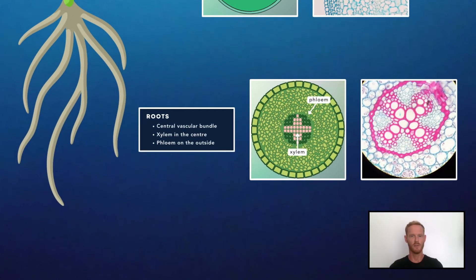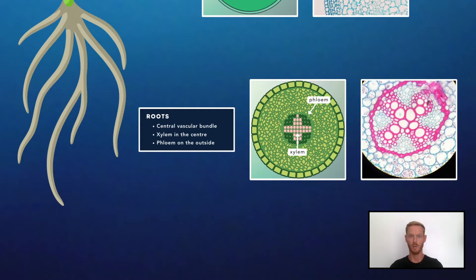In roots, the vascular bundle is located at the centre. The middle part consists of the xylem vessels, and the cells surrounding it are the sieve tubes of the phloem. Roots don't have a conventional epidermis, but do have root hairs for water uptake, which we'll cover in the next lesson.